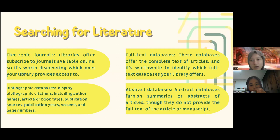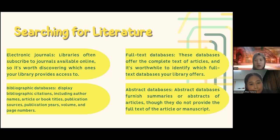The third method is full-text databases, which offer the complete text of articles — it's worthwhile to identify which full-text databases your library offers. The last method is abstract databases, which provide a summary or abstract of an article, though they do not provide the full text of the article or manuscript.